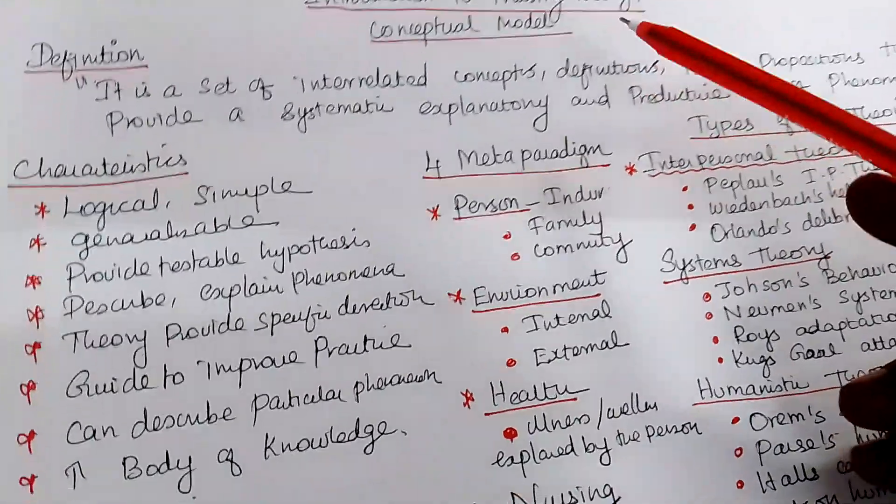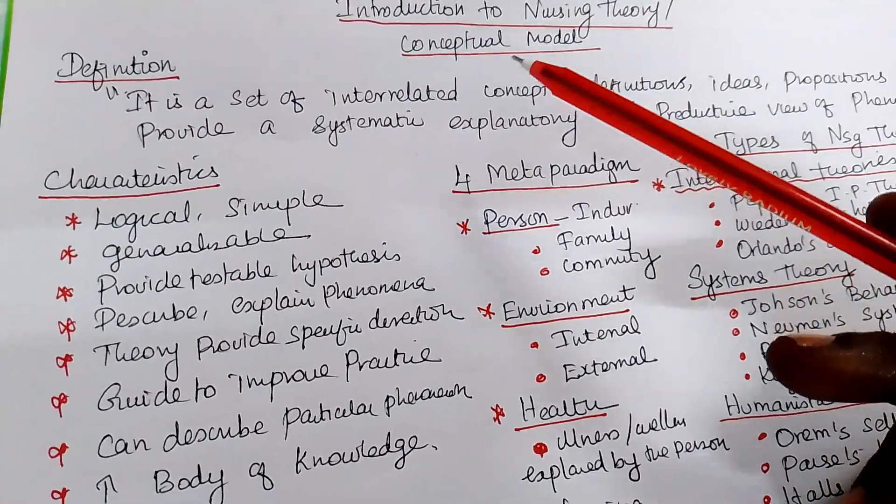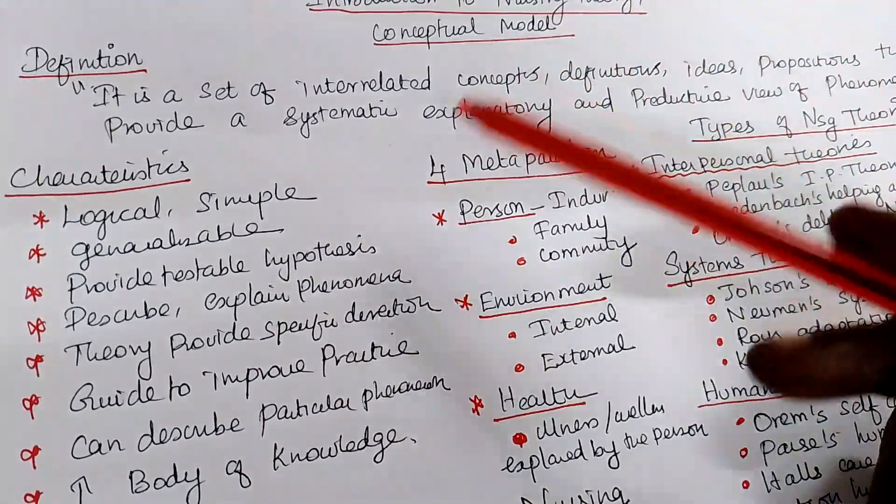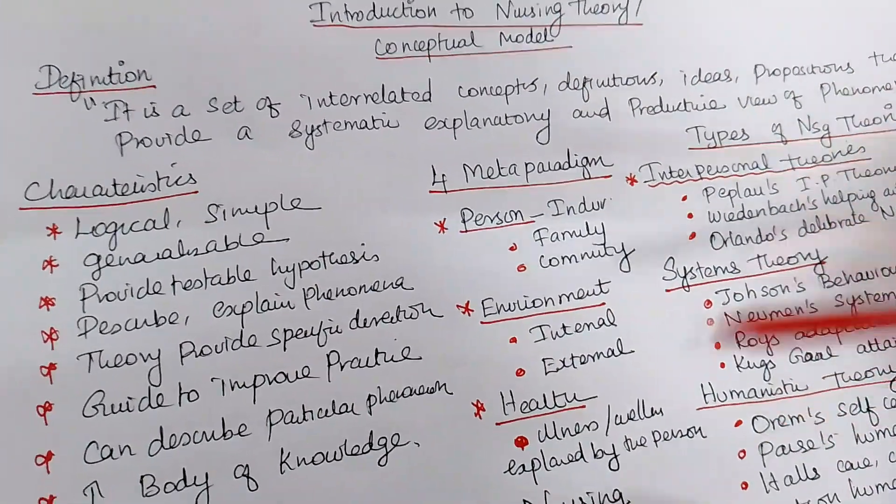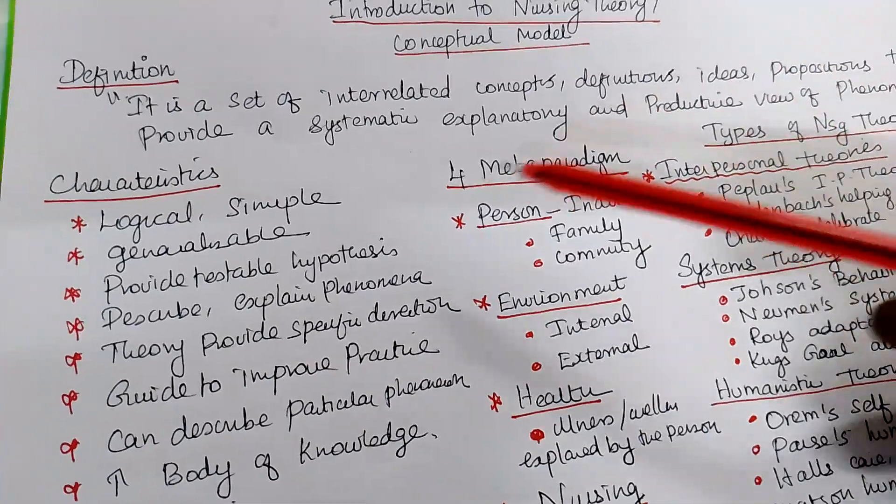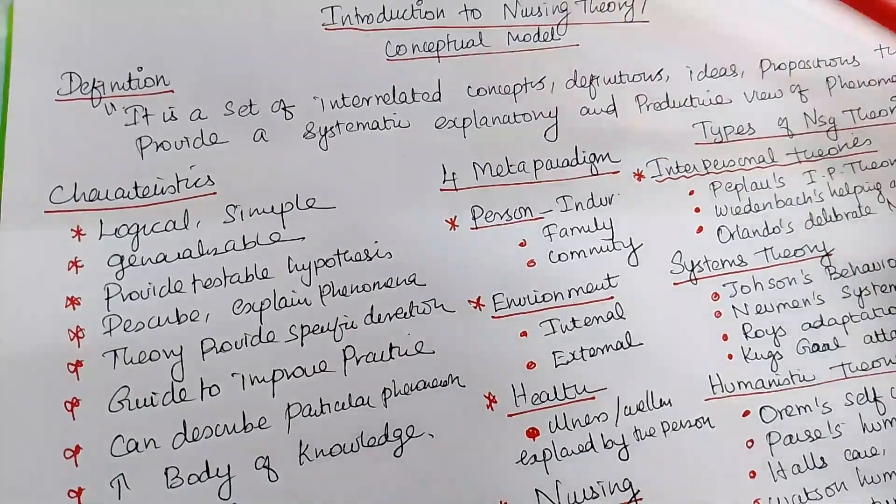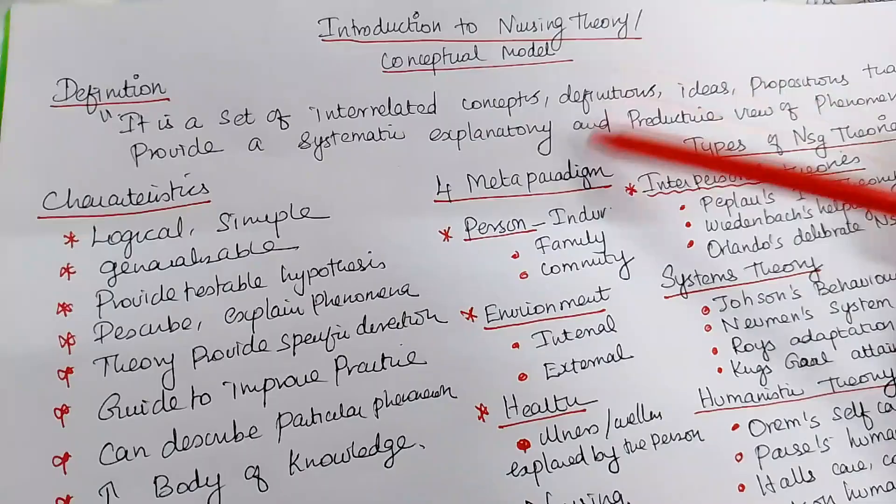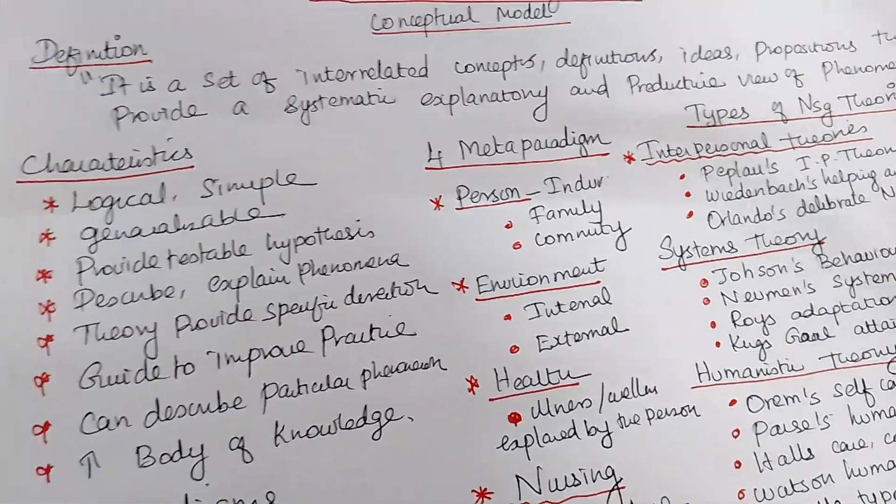Let us come back to this, like introduction to the theory and conceptual framework. As a nursing student, you have to frame a conceptual framework. So you should have an idea about some introduction about some theory and detailing some theories I will discuss in the next forthcoming classes. Here is the definition. We saw the definition. It is a set of interrelated concepts and definitions, ideas, propositions that provide a systematic, explanatory, predictive view of some particular phenomena is called the theory or conceptual framework.